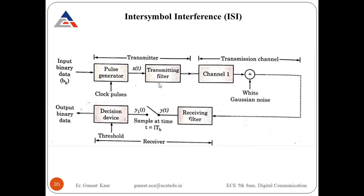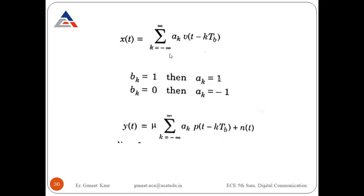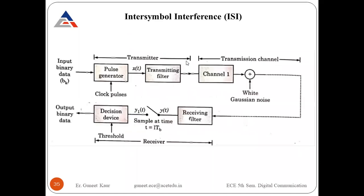Consider a binary PAM system. The input signal consists of a binary sequence bk with bit duration Tb seconds. This sequence is applied to a pulse generator which produces a discrete PAM signal x(t). The expression for x(t) is: x(t) = sum from k = −∞ to ∞ of ak · v(t − kTb), where v(t) is the basic pulse normalized so that v(0) = 1.